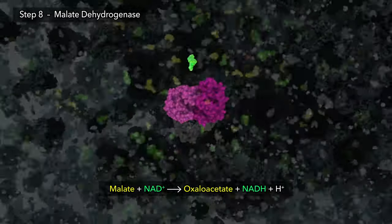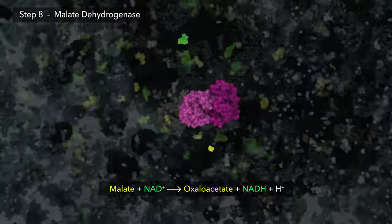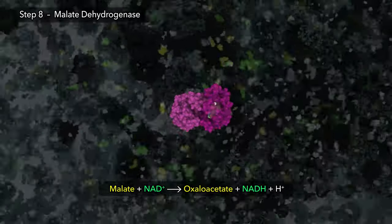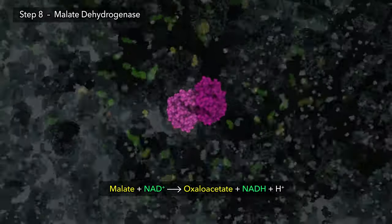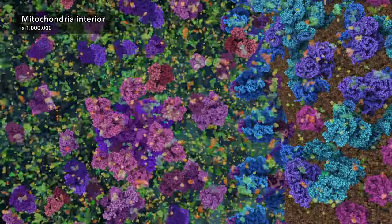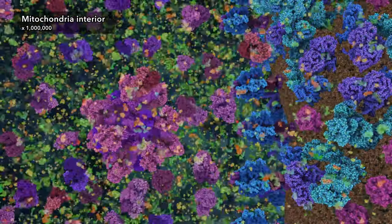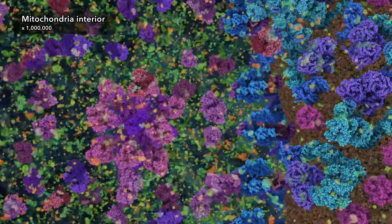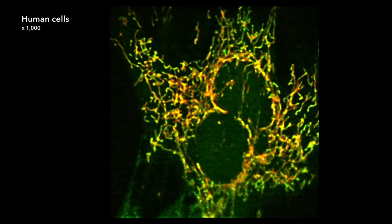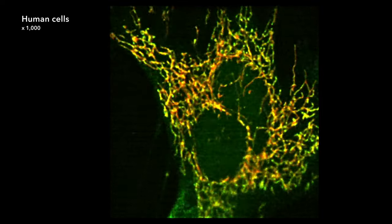Oxaloacetate can return to step one for another loop of the cycle, and is also an essential building block for making amino acids and the genetic code of DNA and RNA. At the center of cellular metabolism, the citric acid cycle generates both chemical energy and material for biosynthesis of the entire diversity of molecules found inside a living cell.